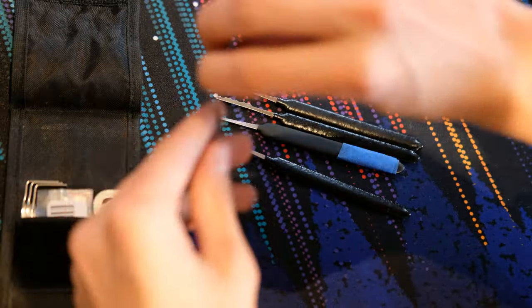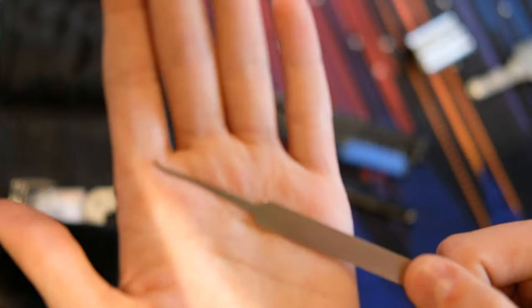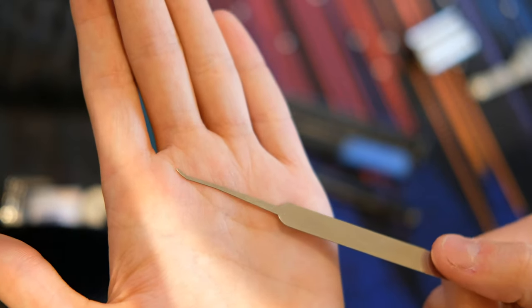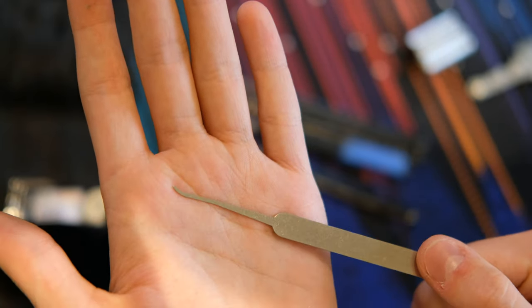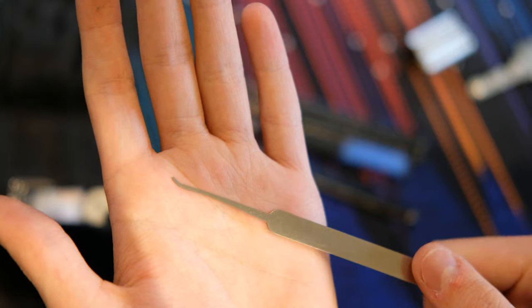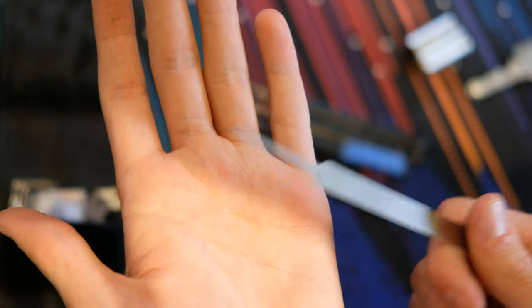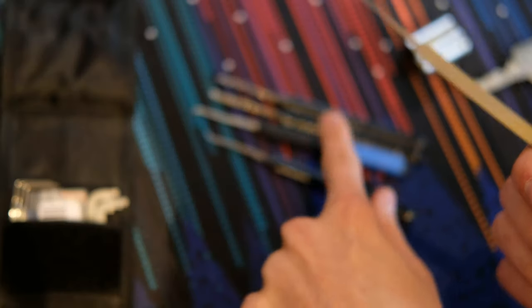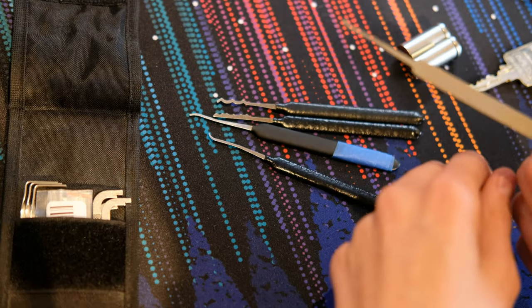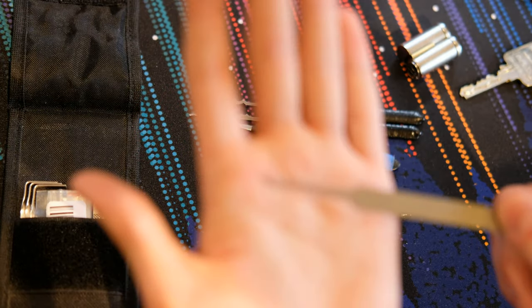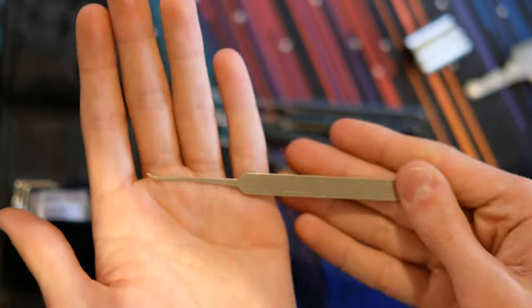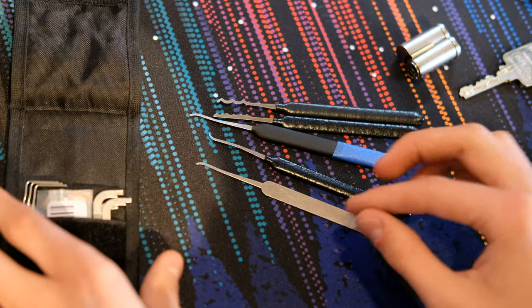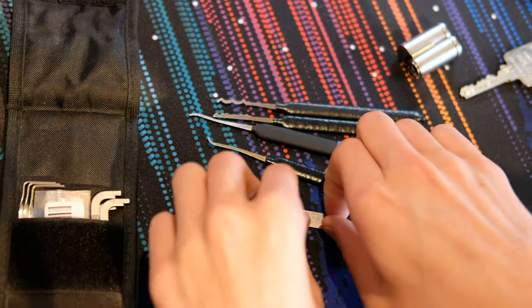Then finally, I have a fifteen thousandths short hook. This is super nice for SFICs and mini high security locks. I don't really use it every day like these picks. Not that I use those every day anyways. But it's certainly one of those things that when you need it, you need it, and it's nice to have.